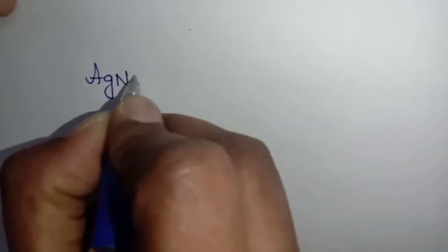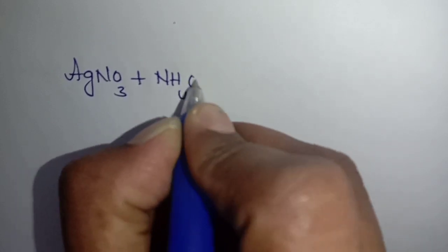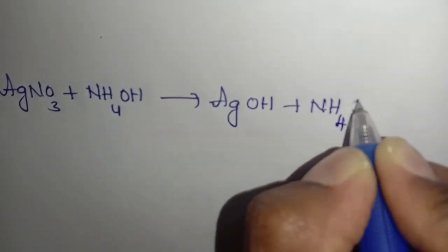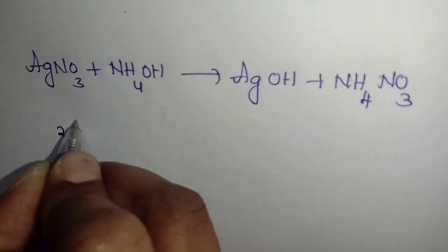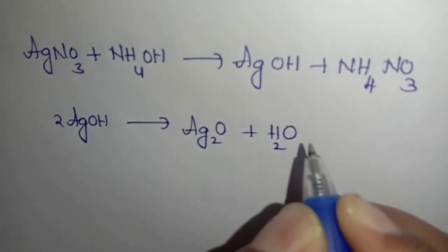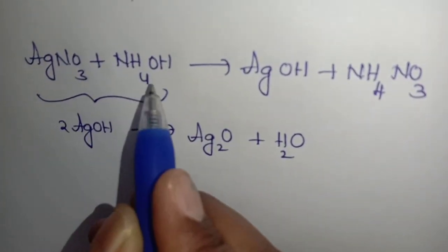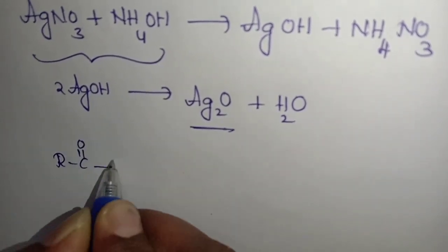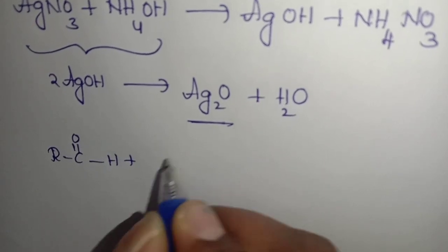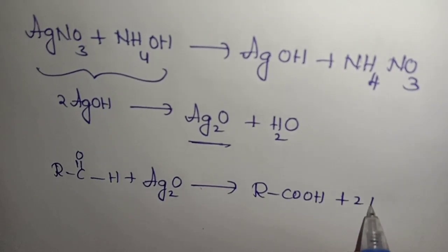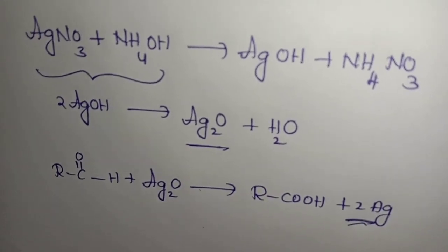I will show you the reaction here. Ammonical silver nitrate means AgNO3 plus NH4OH, we get AgOH plus NH4NO3 silver hydroxide. Two molecules of AgOH gives Ag2O plus H2O. This is ammonical silver nitrate, that means Tollens reagent. From these two we are getting silver oxide. Therefore when aldehydes are treated with Tollens reagent, silver oxide Ag2O is coming from Tollens reagent, so we get RCOOH plus 2Ag. This is responsible for silver mirror.